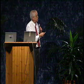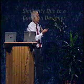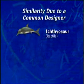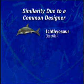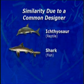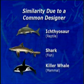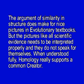Here you have creatures that, as far as their appearance is concerned, are incredibly similar. But the ichthyosaur, being a reptile, could not have had a common ancestor in evolutionary theory with the shark. Neither could the killer whale, which is a mammal. The argument of similarity in structure does make for nice pictures in evolutionary textbooks. But the pictures, like all scientific evidence, need to be interpreted properly — they do not speak for themselves. When understood fully, homology really supports a common creator.